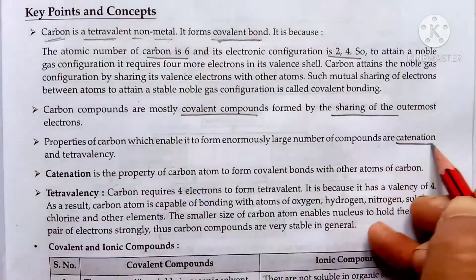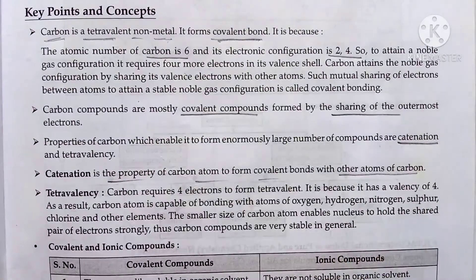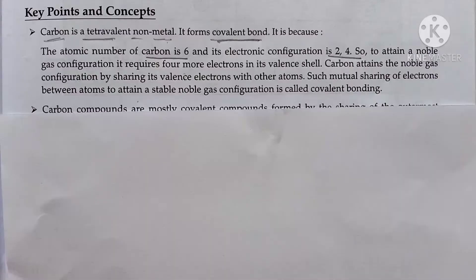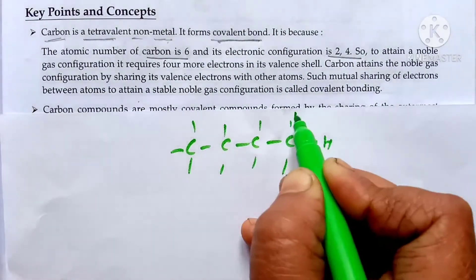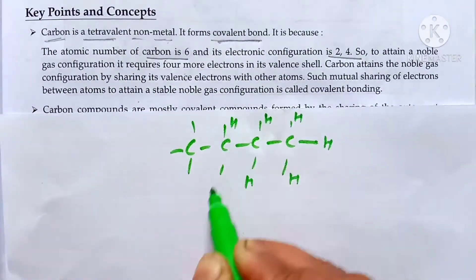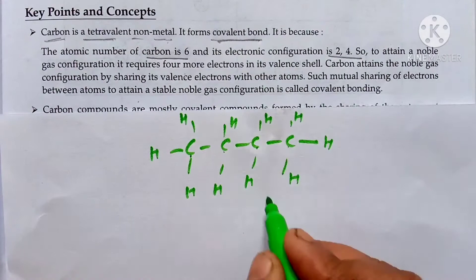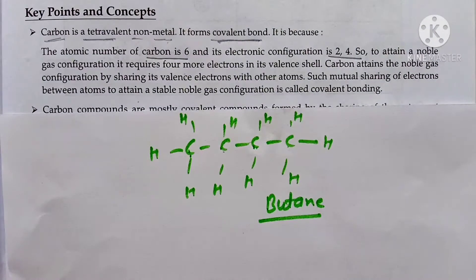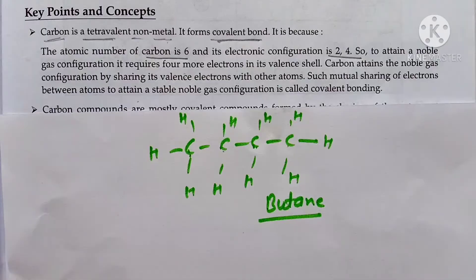Catenation means that carbon has the property to form bonds with other carbon atoms. Carbon can form long chains with many carbon-carbon bonds, and this capability is called catenation. For example, we can make long straight chains of carbon atoms — methane, ethane, propane, butane — each adding one more carbon.